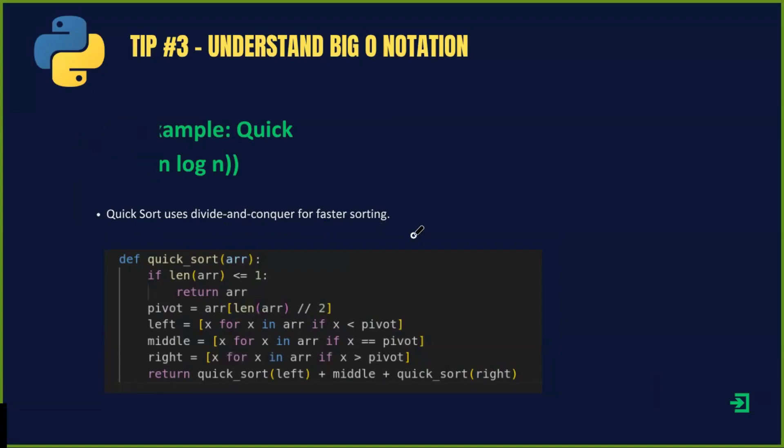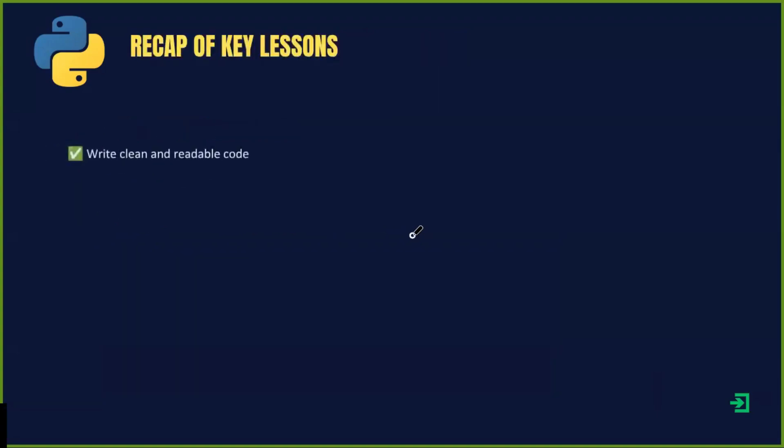Let's summarize what we have learned so far. Writing clean, readable code is essential. List comprehensions make your code concise. Dictionary comprehensions enhance efficiency. Understanding Big O helps you optimize your code. By applying these concepts, you will become a better Python programmer.